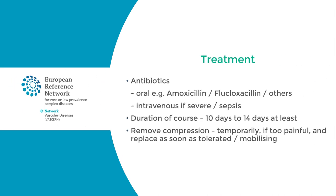The treatment is with antibiotics. The type of antibiotic varies depending upon recommendations by individual countries and localities. For example, oral amoxicillin or flucloxacillin can be used. If the condition is severe or there is sepsis, then intravenous antibiotics are necessary. The duration of the course of antibiotics is 10 to 14 days at least. We usually recommend that patients remove compression temporarily if the limb is painful and replace it as soon as possible or as soon as it's tolerated, particularly when they start to mobilise again.